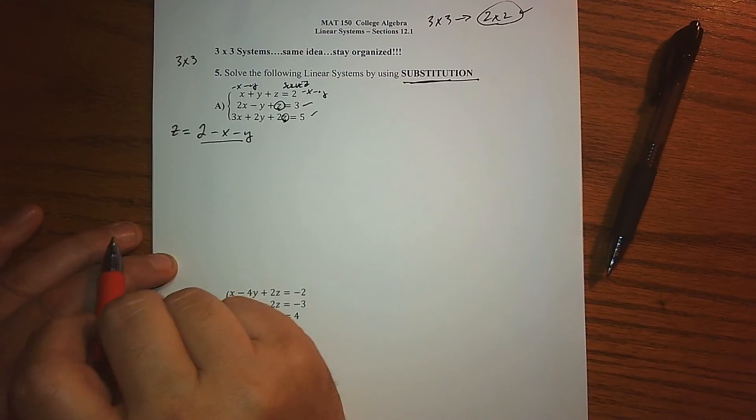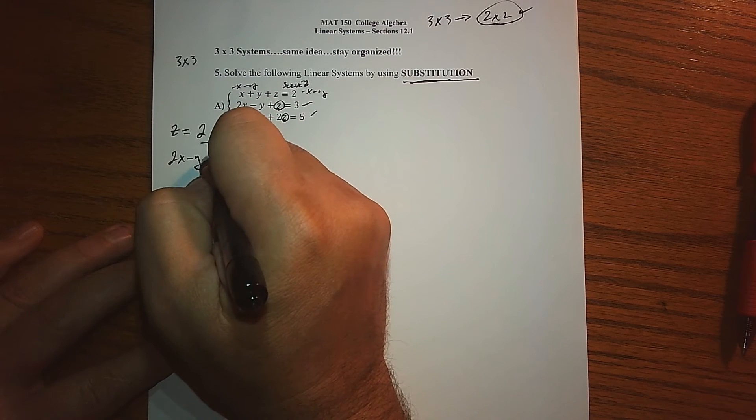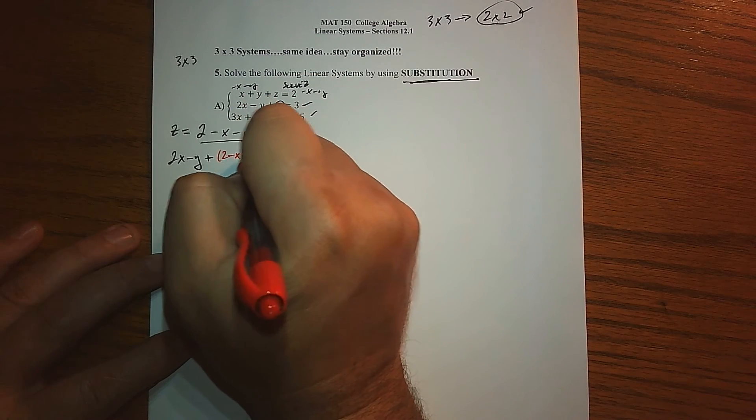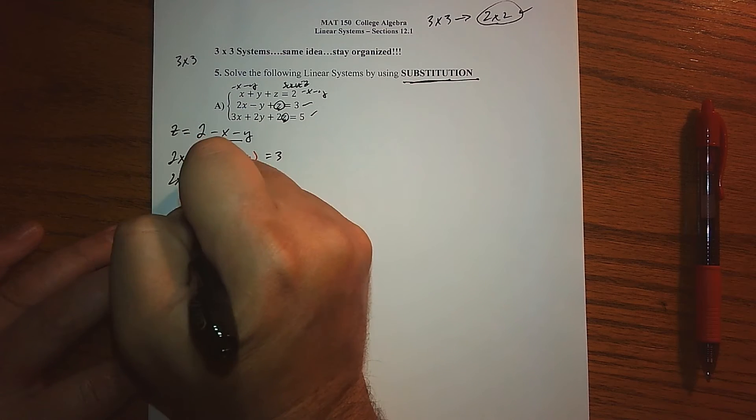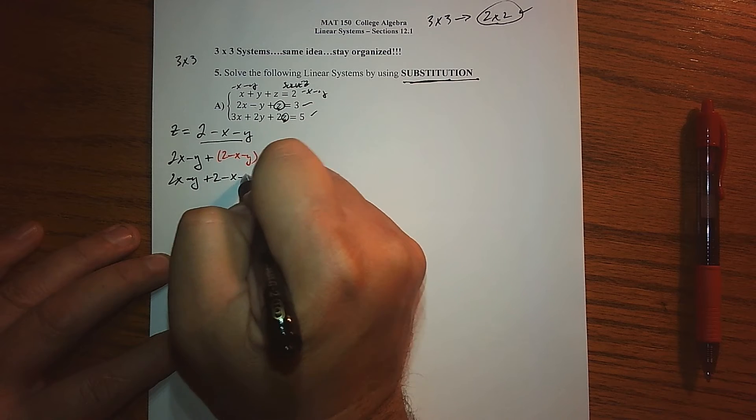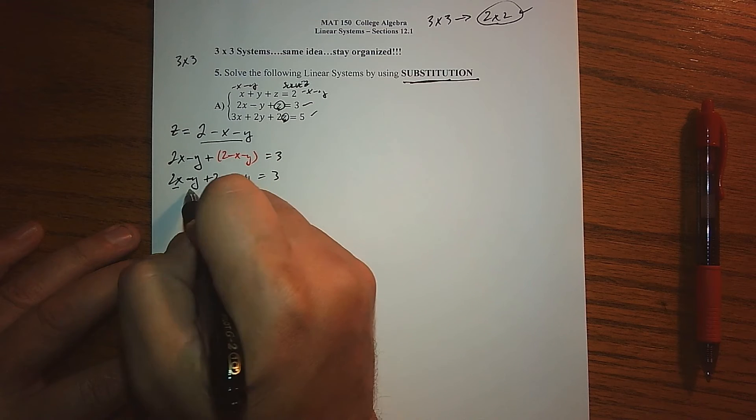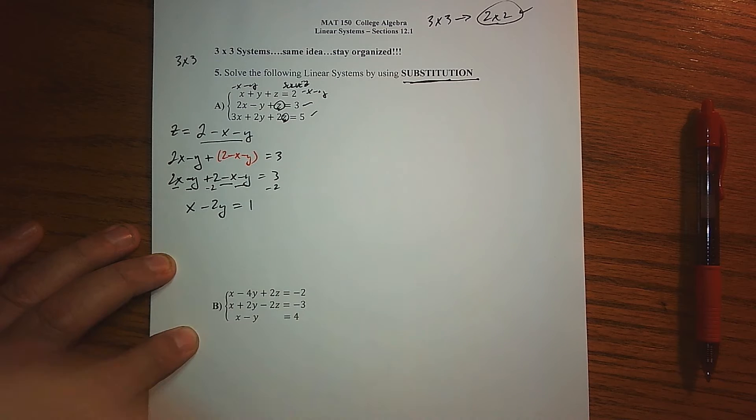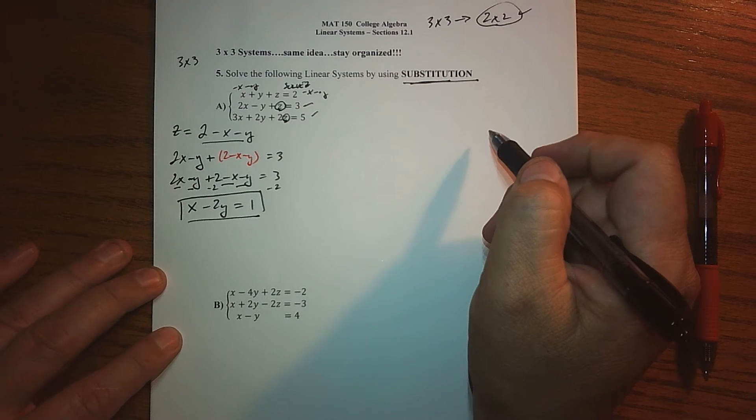We get 2X minus Y plus 2 minus X minus Y. Cleaning this up, I end up with 2X minus Y plus 2 minus X minus Y equals 3. 2X and negative X is an X, minus Y and minus Y is minus 2Y, and then if we subtract 2 from both sides, we end up with X minus 2Y equals 1. So I went from a situation that now just has two variables in it.